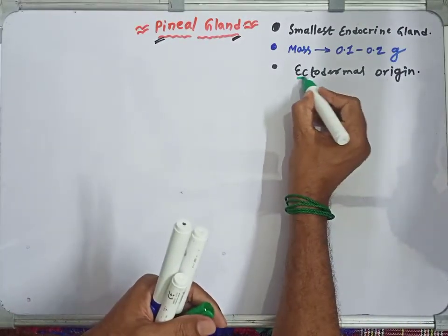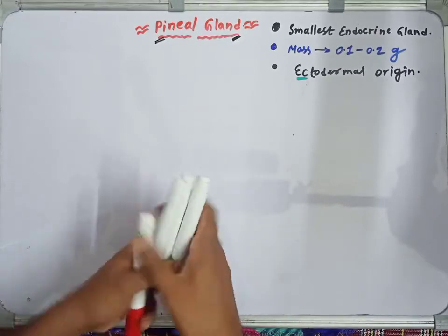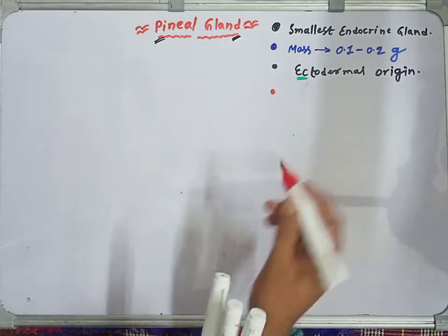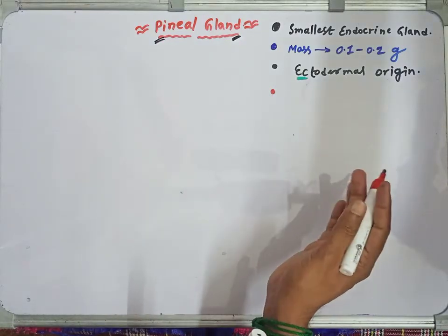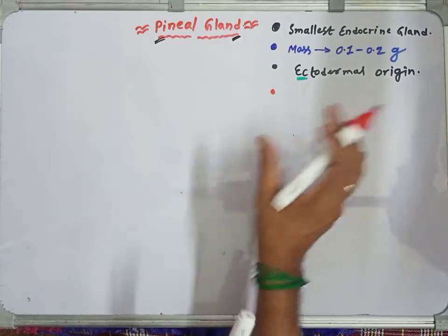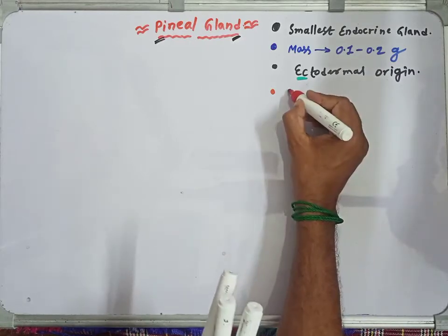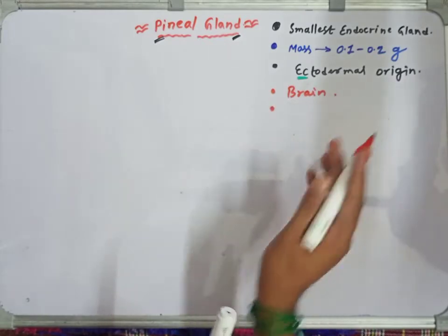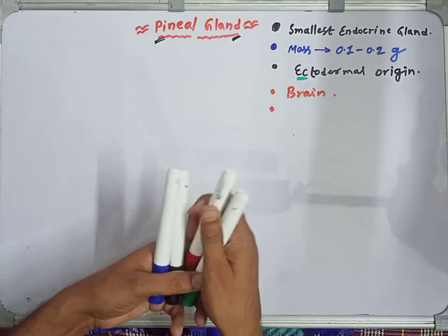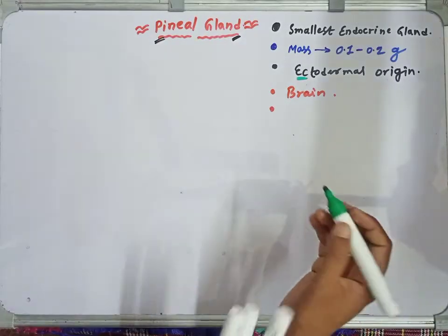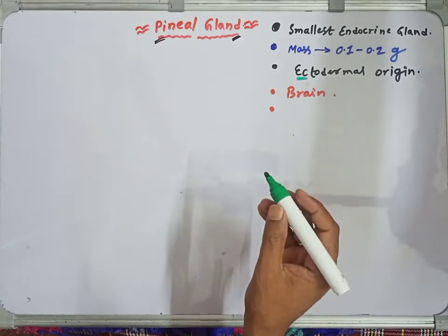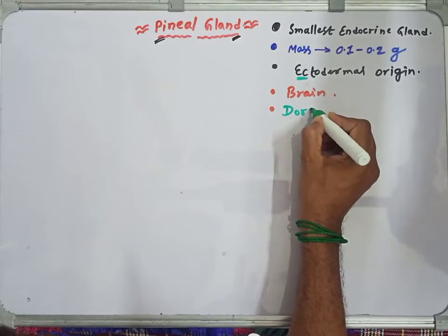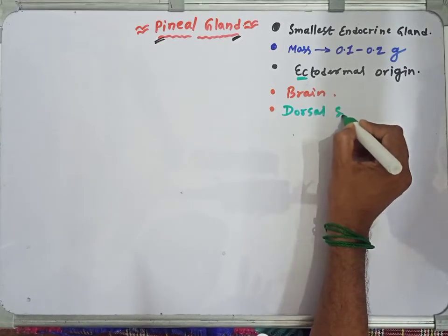Now let's look at where the pineal gland is actually positioned in our brain. The pineal gland is situated and located on the dorsal side of the forebrain.